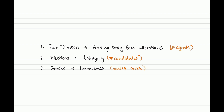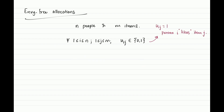The problem of finding envy-free allocations has been studied in many different settings, and we are narrowing down on one specific scenario that is particularly conducive to the ILP approach. We are given as input a set of n people and a collection of m items, along with a utility matrix U describing the utility each individual has for any of the given items. Specifically, u_ij equals one means person i likes item j, and u_ij equals zero means person i does not care for item j.